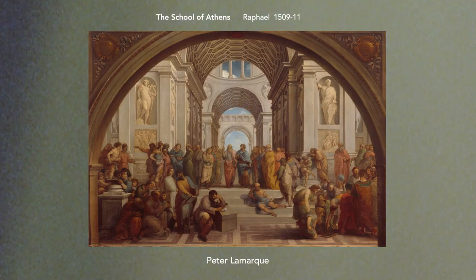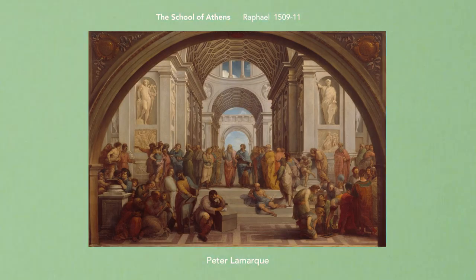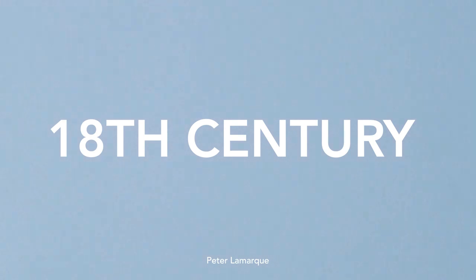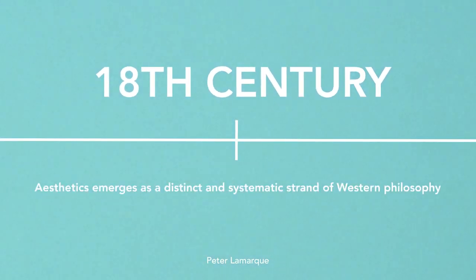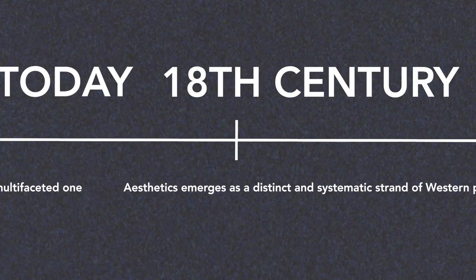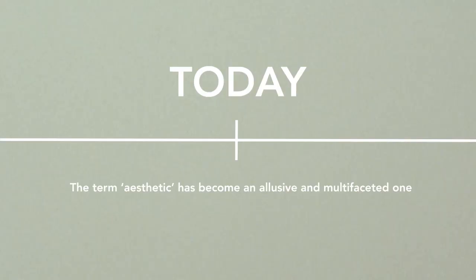Although the notion of contemplating art and beauty extends as far back as ancient Greece, the word aesthetics first began being used in the 18th century, when aesthetics emerged as a distinct and systematic strand of Western philosophy. Since then, the term aesthetic has become an elusive and multifaceted one.